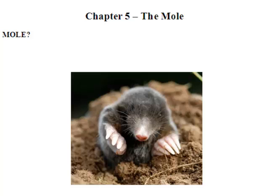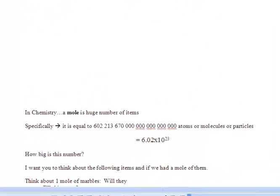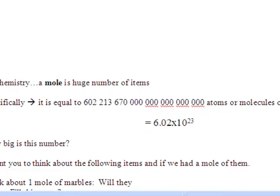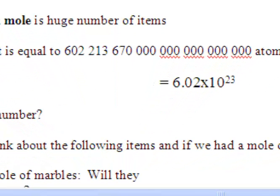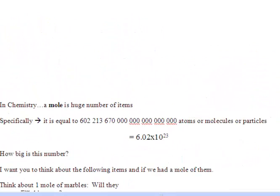You may think it is this animal, but it turns out in chemistry, a mole is a huge number. Specifically, it is 602,213,670,000,000,000,000,000 atoms or molecules or particles. You guys will appreciate that people invented scientific notation because it is 6.02 times 10 to the 23.